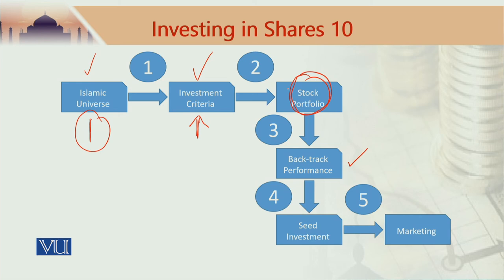Step number four: now that you have done all your homework — identified your portfolio and done a backtrack performance — you would go to a big investor for seed investment. A big investor who might be willing to put $15 million or $30 million into your fund. Normally for a global equity fund, a minimum is about $30 million US dollars in the form of seed investment to ensure that the portfolio generates some return. Once you have got the seed investor, you then start marketing the fund to the general public — anyone you would like to sell shares in this fund to.